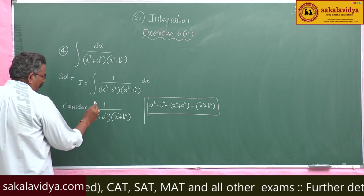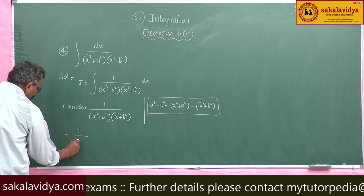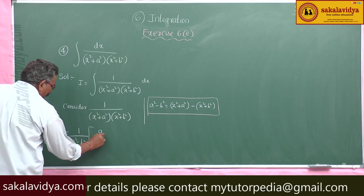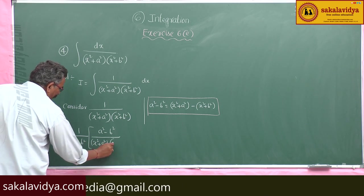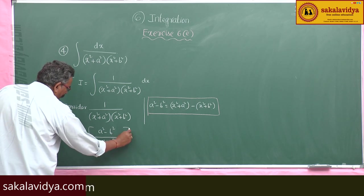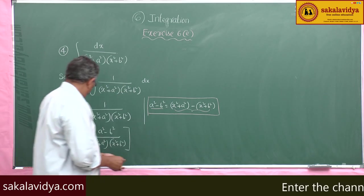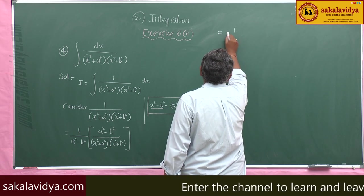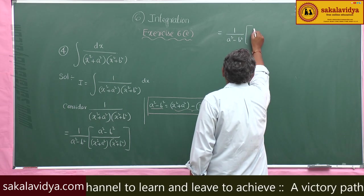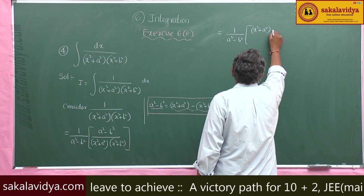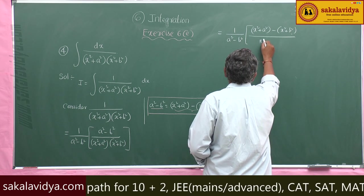Now multiply and divide by (a² - b²). This we can write as 1/(a² - b²) into (a² - b²) divided by (x² + a²)(x² + b²). Now, this (a² - b²) is replaced by that value, so we can write 1/(a² - b²) into (x² + a²) minus (x² + b²), all over (x² + a²)(x² + b²).